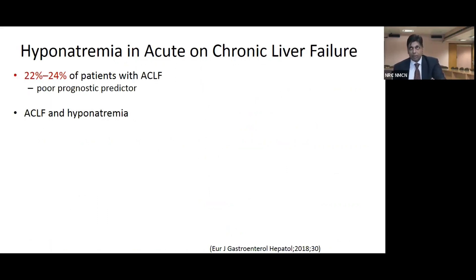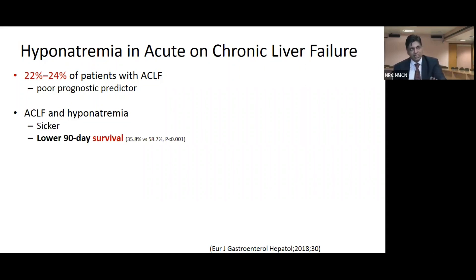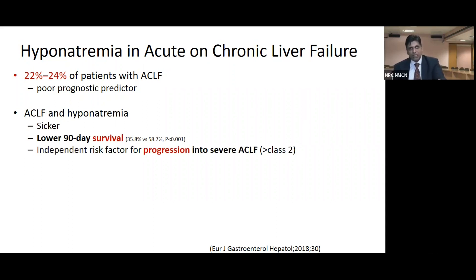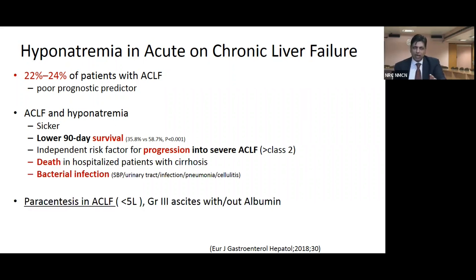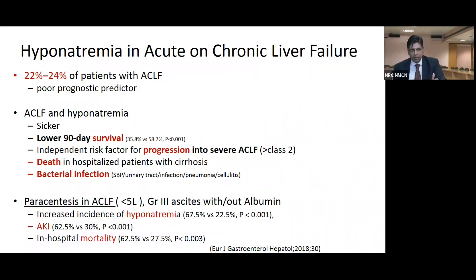In ACLF, the pathophysiology of hyponatremia remains the same, with prevalence up to 25%. These patients are sicker, have lower 90-day survival, and hyponatremia is an independent risk factor for progression to severe ACLF, in-hospital death, and increased risk of bacterial infections. Paracentesis in ACLF of less than five liters is associated with increased incidence of hyponatremia, AKI, and in-hospital mortality, probably because of worse hemodynamics in these patients.